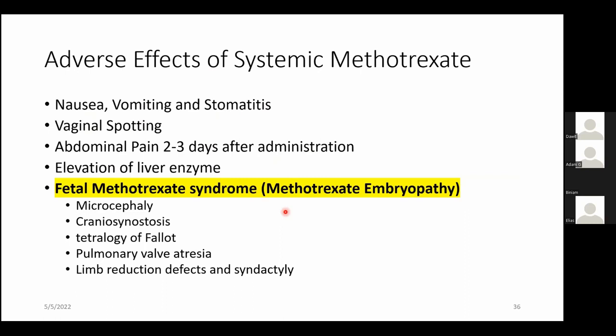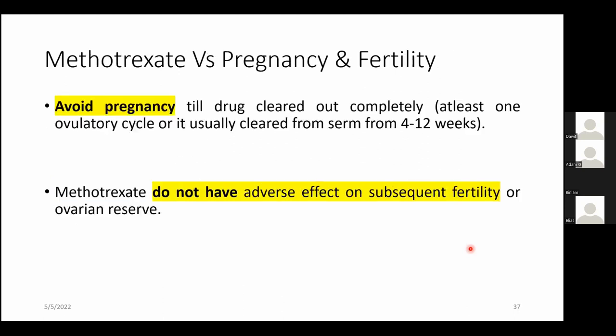If pregnancy occurs while on methotrexate, methotrexate embryopathy can result, which includes microcephaly, craniosynostosis, tetralogy of Fallot, pulmonary valve atresia, limb reduction defects, and syndactyly. Therefore, pregnancy must be avoided for at least four to twelve weeks after treatment. Methotrexate has no adverse effect on subsequent fertility.